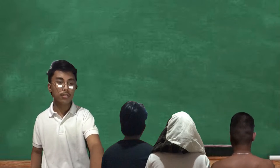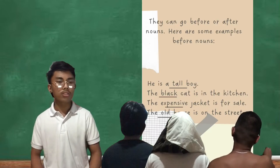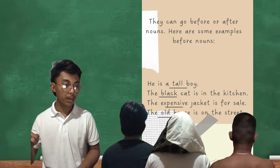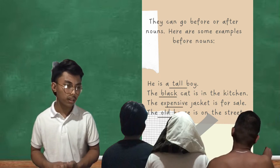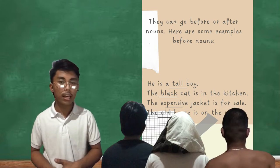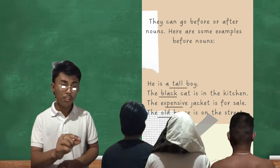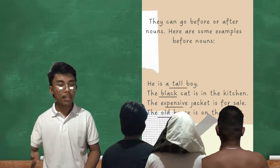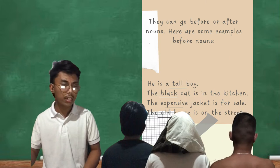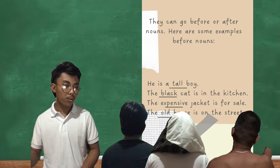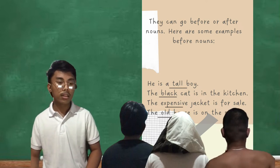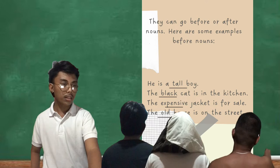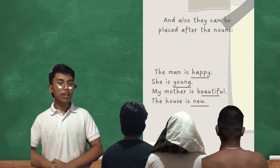Adjectives can go before or after nouns. Here are some examples before the noun. Notice the underlined words — those are the adjectives. In 'He is a tall boy,' the adjective is 'tall' and the noun is 'boy.' The black cat is in the kitchen. The expensive jacket is for sale. The old house is on the street.